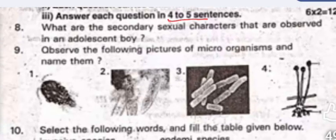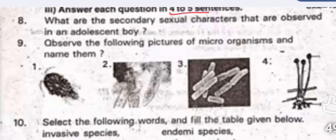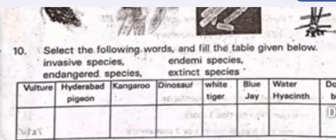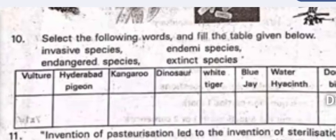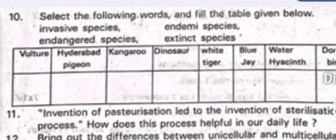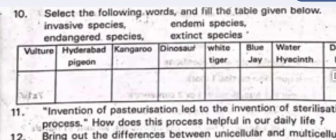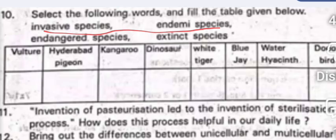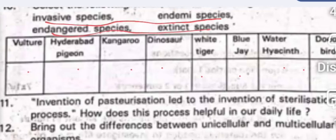Six questions times two marks equals twelve marks in Section 2. Question 8: what are the secondary sexual characters observed in an adolescent boy? Question 9: observe the following pictures of microorganisms and name them — there are four pictures. Question 10: select the following words and fill in the given table below.